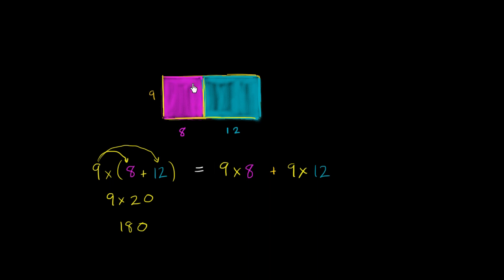if you calculate the area of this purple rectangle, that is 9 times 8, so that is going to be equal to 72. That's the purple rectangle.